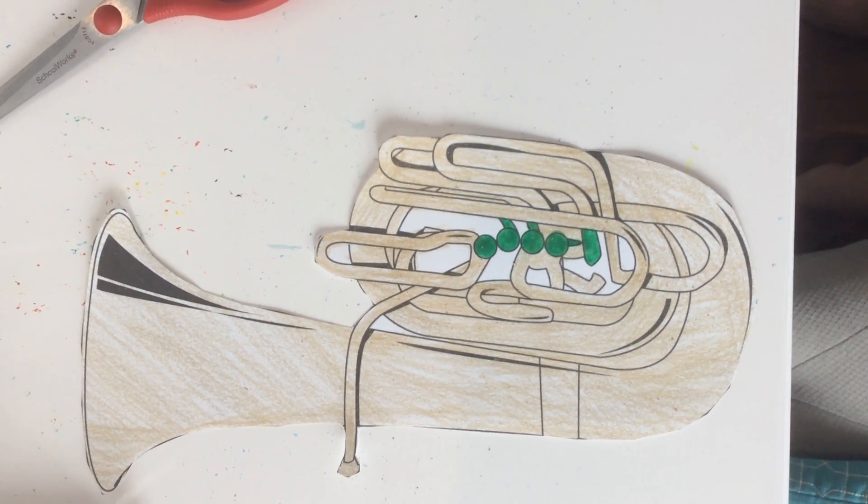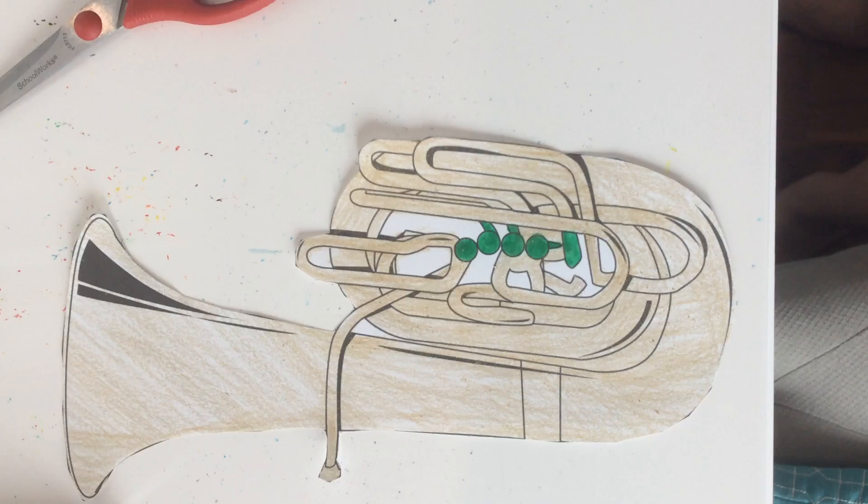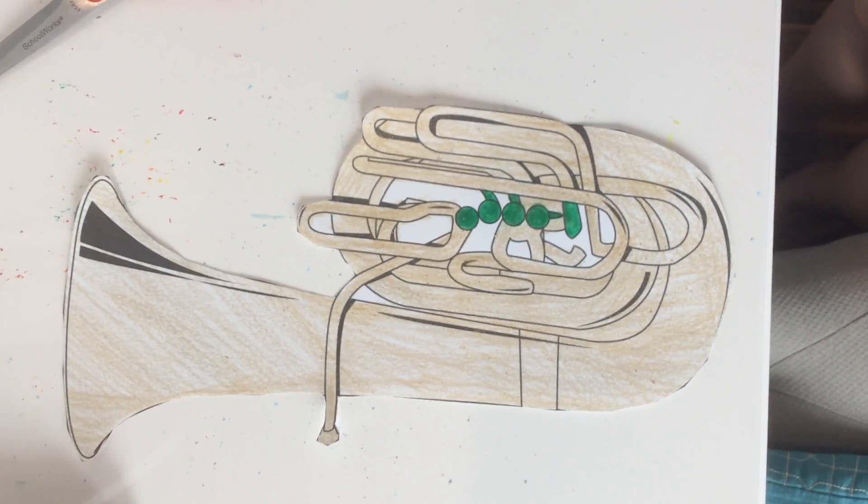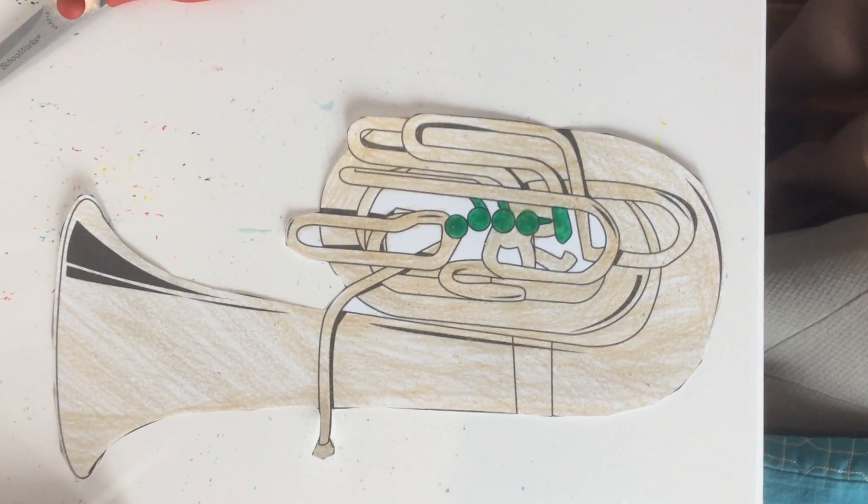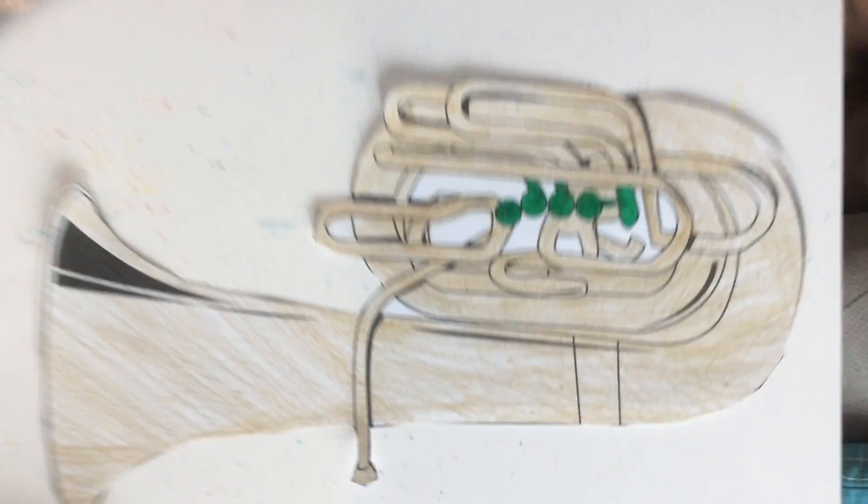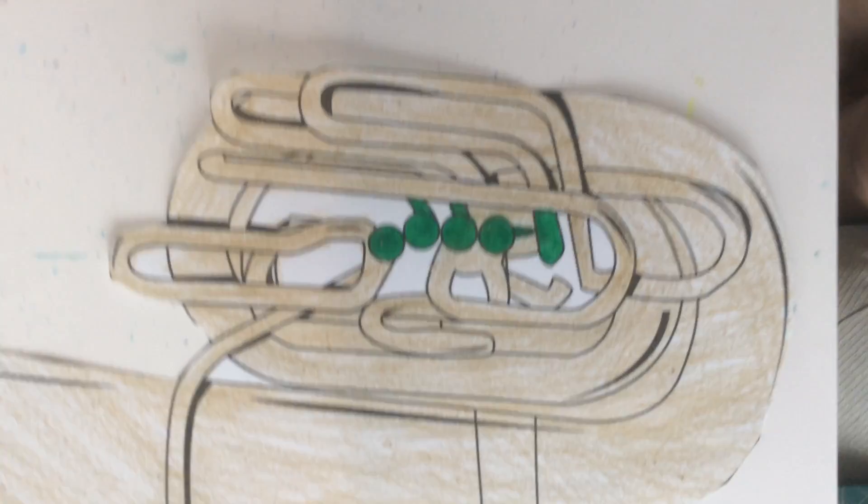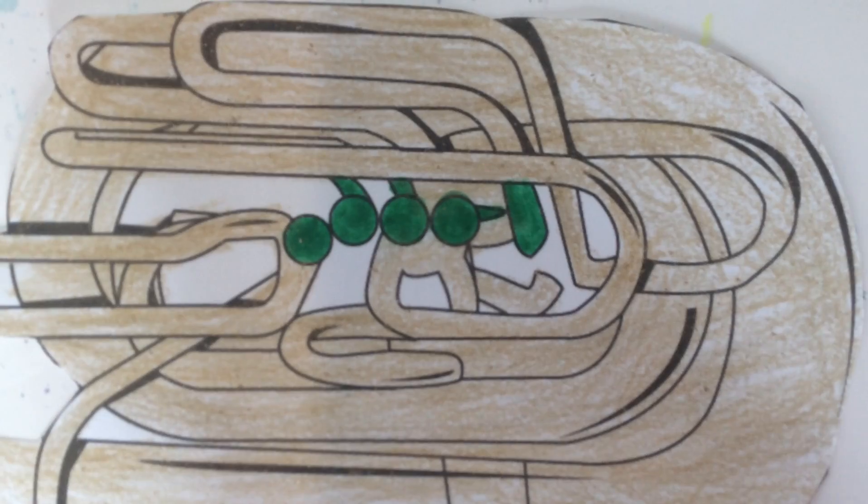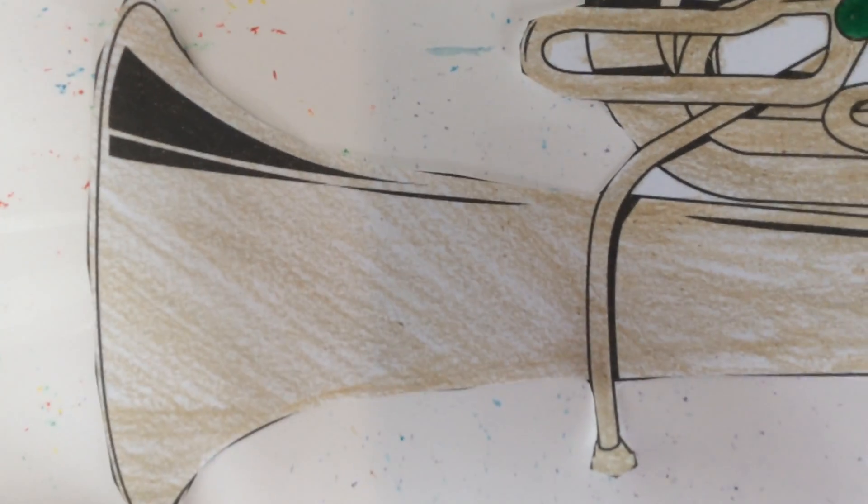Here is my tuba. I colored this tuba just now, and I accidentally ripped the mouthpiece. Over here the green things are the keys of the tuba, and on top here is the bell.